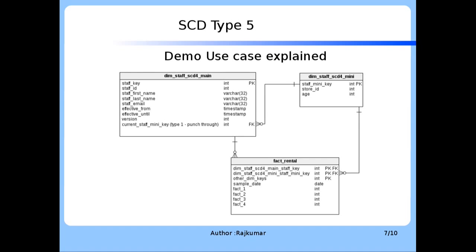The demo use case explained. This is the table structure which we are going to use as part of this demo. The table structure is similar to what we have seen in the SED type 4 demo, except for one particular difference in the dimension staff SED type 4 main dimension table. You can see the current staff mini key, which is a referential or foreign key to the staff mini key located in the DIMM staff SED type 4 mini dimension table. This is the key difference between the SED type 4 and the SED type 5 dimension technique.